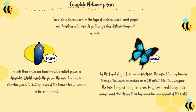Pupa: insects then enter an inactive state called pupa or chrysalis. Whilst inside the pupa, the insect will excrete digestive juices to destroy much of the larvae's body, leaving a few cells intact. Adult: in the final stage of the metamorphosis, the insect finally breaks through the pupa, emerging as a full adult.